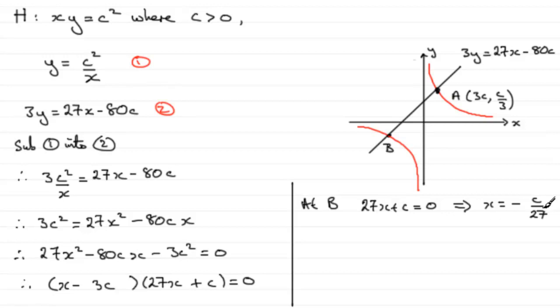So there's our X coordinate then at B. And all we need to do is substitute this into one of these two equations then to get what the corresponding Y value would be. And it makes sense to go into 1 if you ask me.